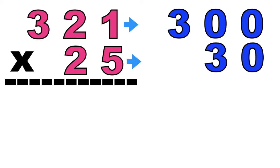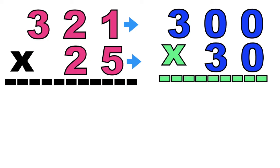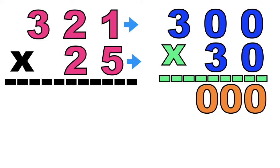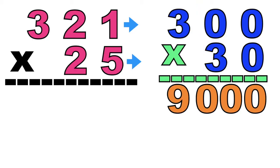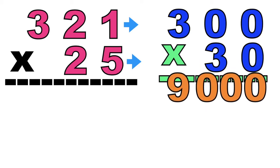So we can now multiply the rounded-off factors. As you can see, we have three zeros, so we're going to write three zeros at the product. Then let's multiply the first non-zero digit. We have 3 times 3 equals 9. So the estimated product of 321 and 25 is 9,000.